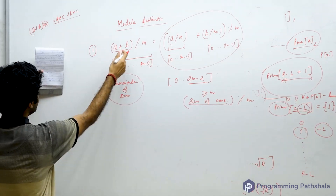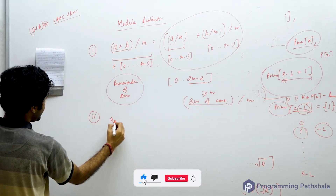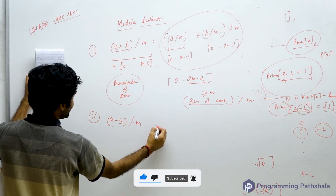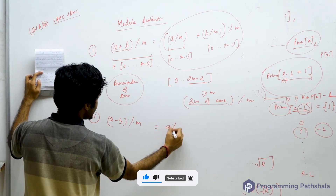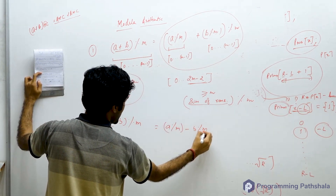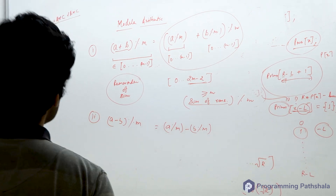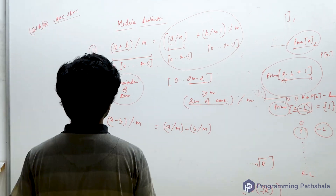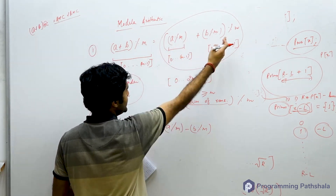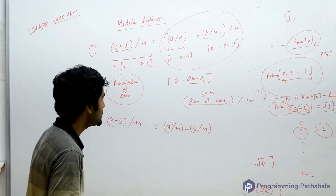Now let us talk about the subtraction operator: (a minus b) mod m. Can it be written as (a mod m) minus (b mod m)? Think about it: the result of (a + b) mod m lay in between 0 to 2m minus 2. Now what would happen with subtraction? Think about what combinations of values of a mod m and b mod m can give answers in different ranges.